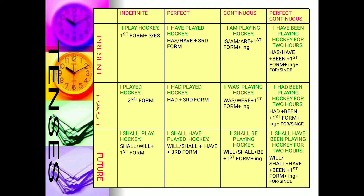Future indefinite: 'I shall play hockey' — main hockey kheelunga. When? Morning, evening, tomorrow, day after tomorrow — we are not sure. So it is indefinite. The point of time is after the present point of time, making it future, but not very definite. In writing, the rule for present indefinite is: subject + first form of the verb + object. The only rule is whether to place 's' or 'es' with the first form when the subject is singular.